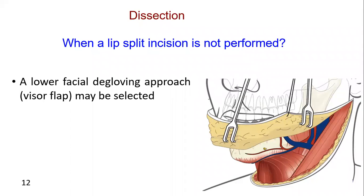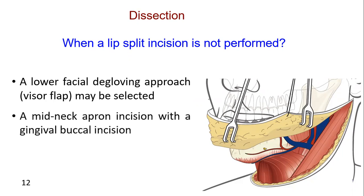In these cases, rather than a lip split incision, a lower facial degloving approach — that is, a visor flap — may be selected. This approach combines a mid-neck apron incision with a gingival buccal incision.